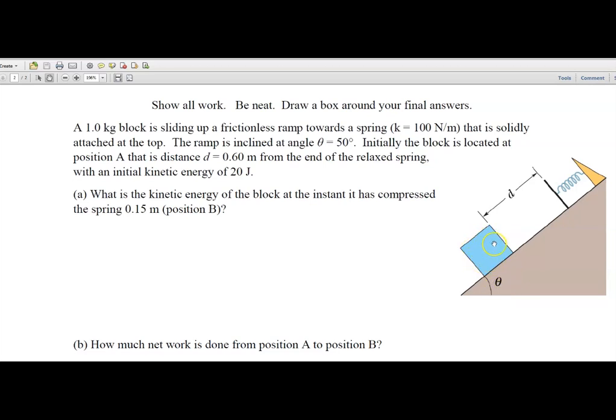Initially, the block is located at position A that is 60 centimeters away from the uncompressed spring. At position A, it has an initial kinetic energy of 20 joules, meaning it is moving up the ramp.